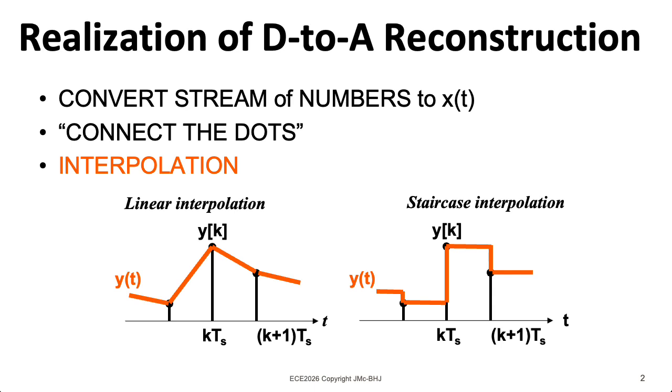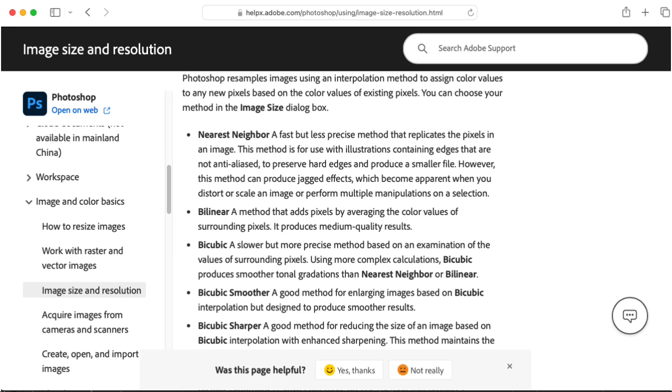We can imagine drawing lines to connect the dots of the different samples. If we think about that in the image domain, that would correspond to the bilinear interpolation formula used by Photoshop to expand images.